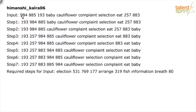Look at the input — the inputs have a combination of words and numbers. We have 984, 885, 193, 257, 883, and some words: baby, cauliflower, complaint, selection, eat. Then there is a step-by-step process and the last step is step 7. A new input has been given to us and we have to find out the step-by-step process for that input.